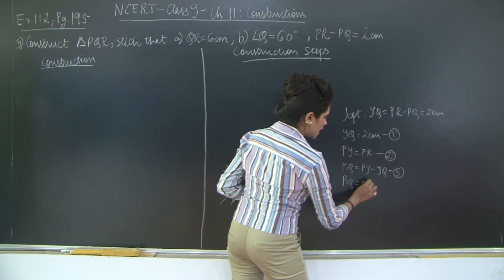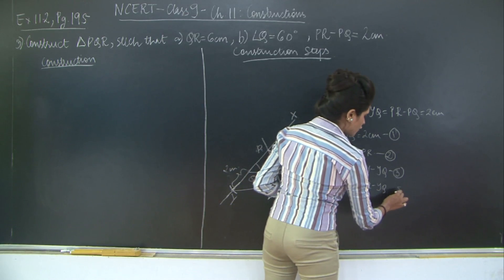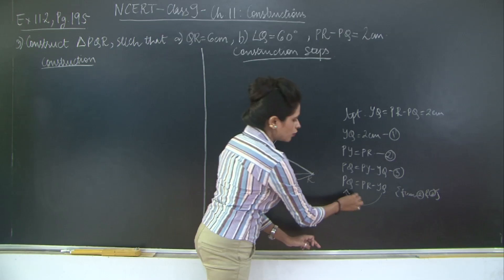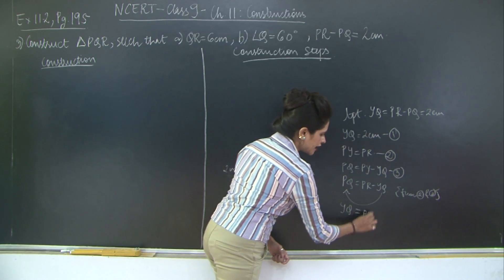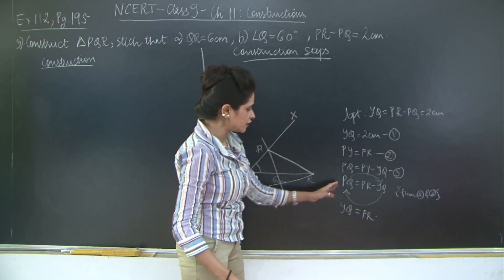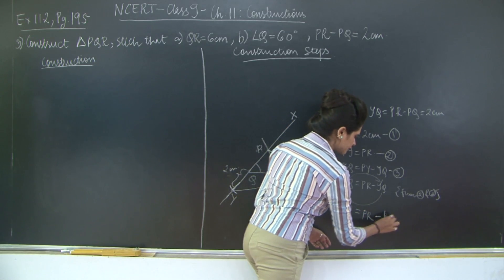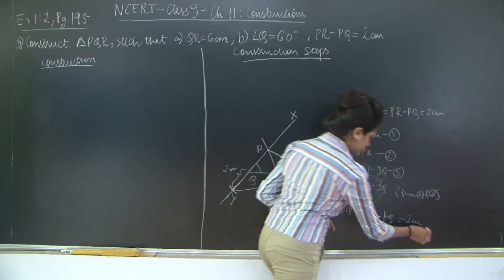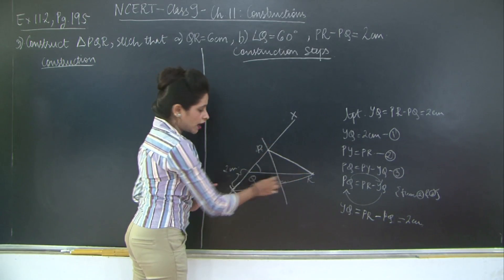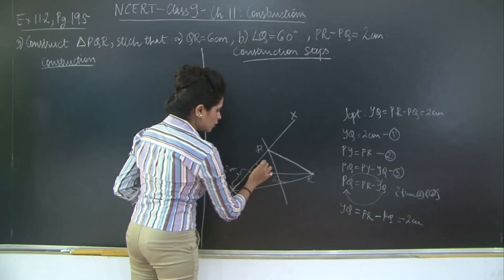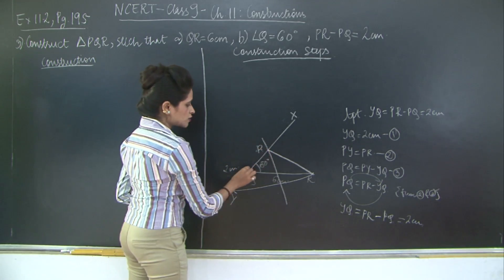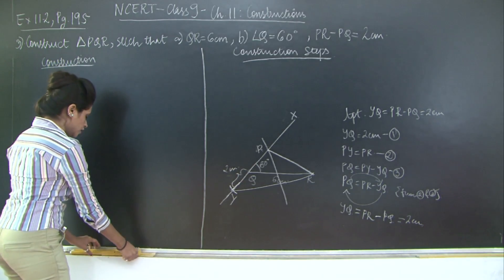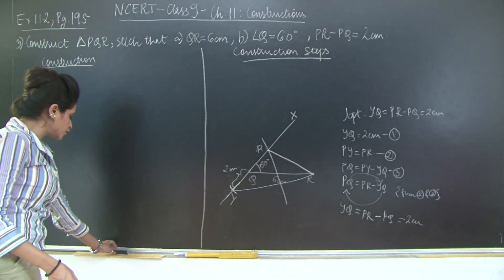From PQ equals PR minus YQ, I bring YQ to the other side and PQ to the other side, giving YQ equals PR minus PQ. But YQ is 2 centimeters — hence proved. Therefore this is our required triangle PQR where base QR is 6 centimeters, angle Q is 60 degrees, and the difference PR minus PQ is 2 centimeters, where PR is the greater side. Now let's go ahead and do the actual construction.